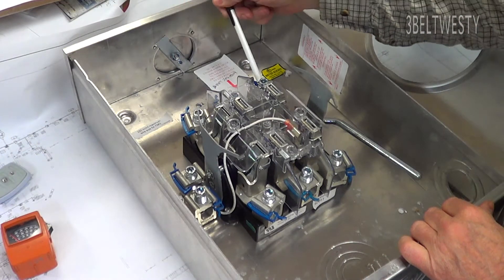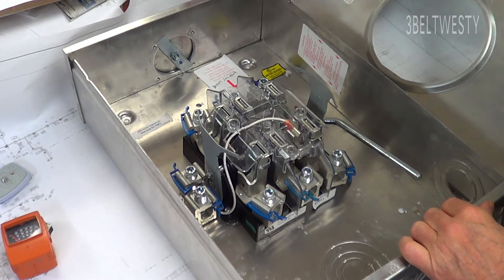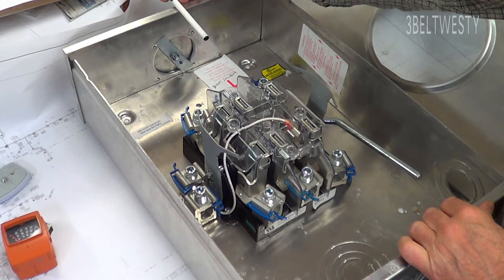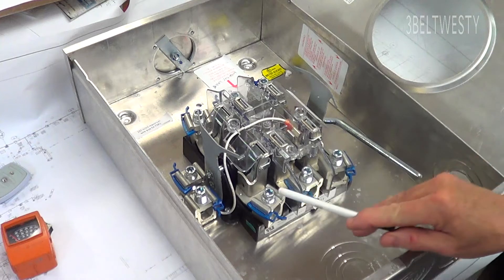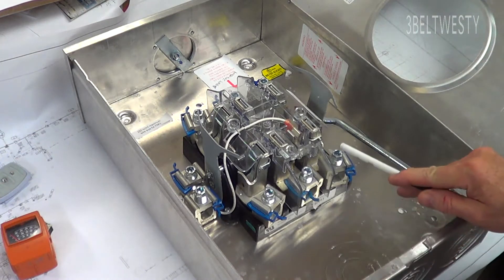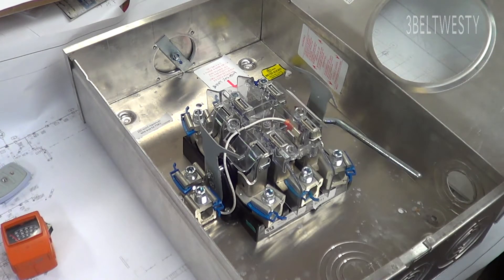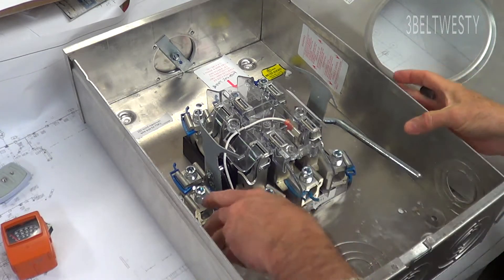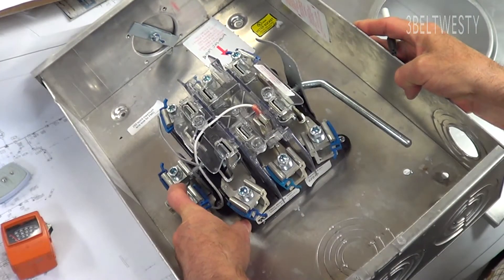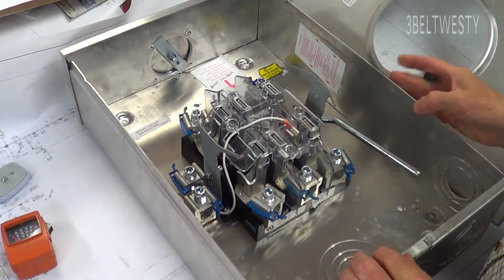You've got three hots - one, two, three - that come down from the service provider, and then the outputs are these three hots. They go off to the sub panels. And then over here there's one that is a neutral.